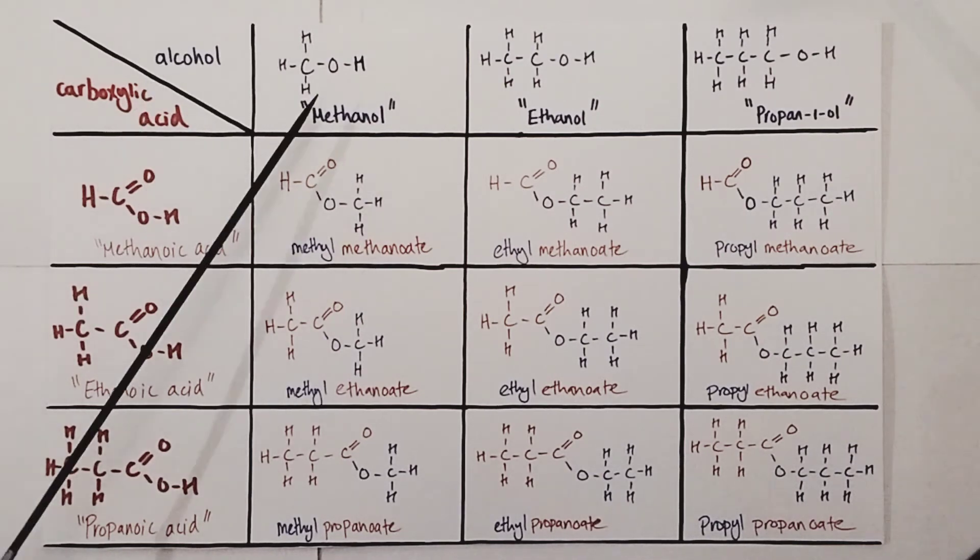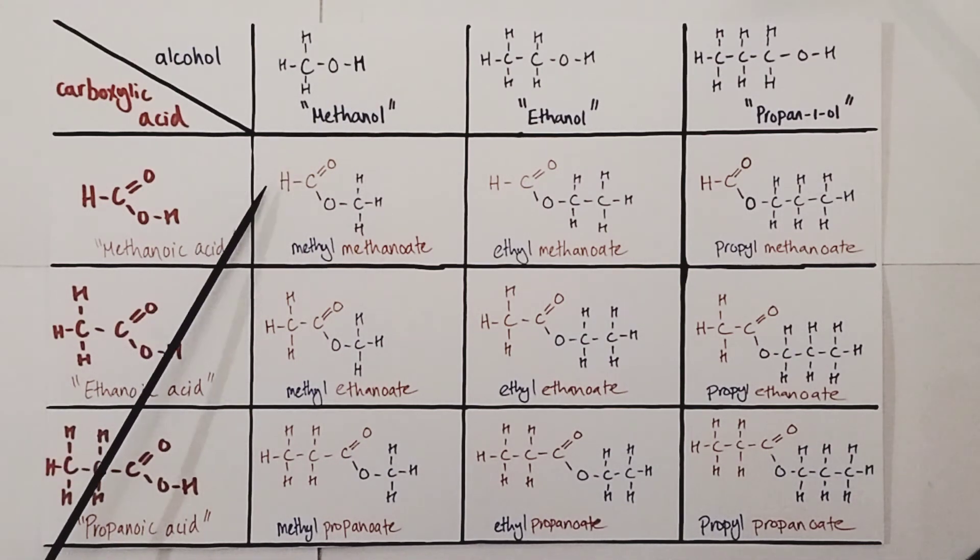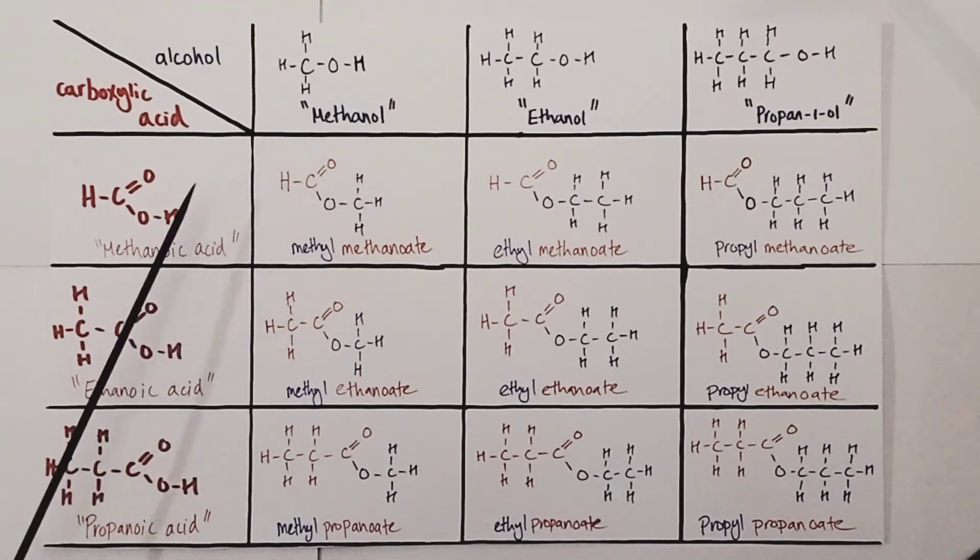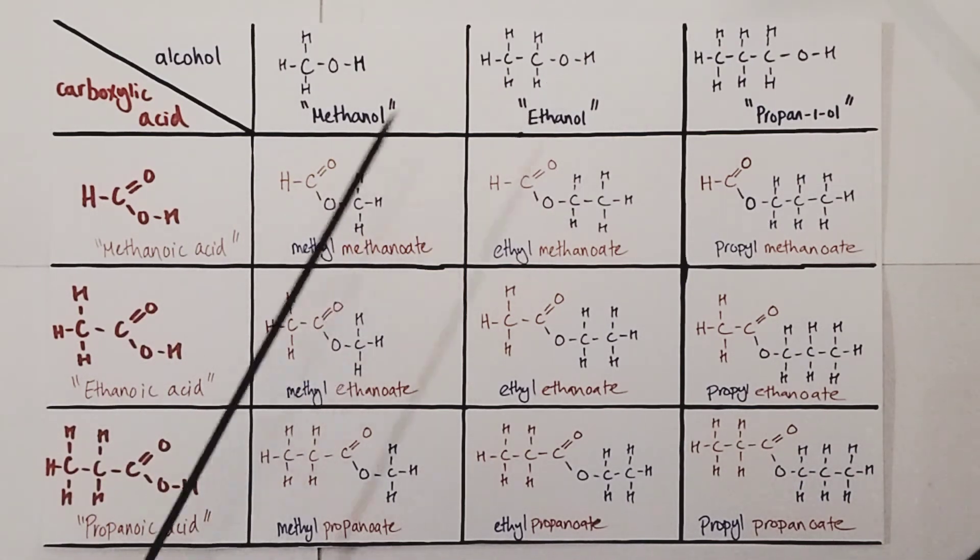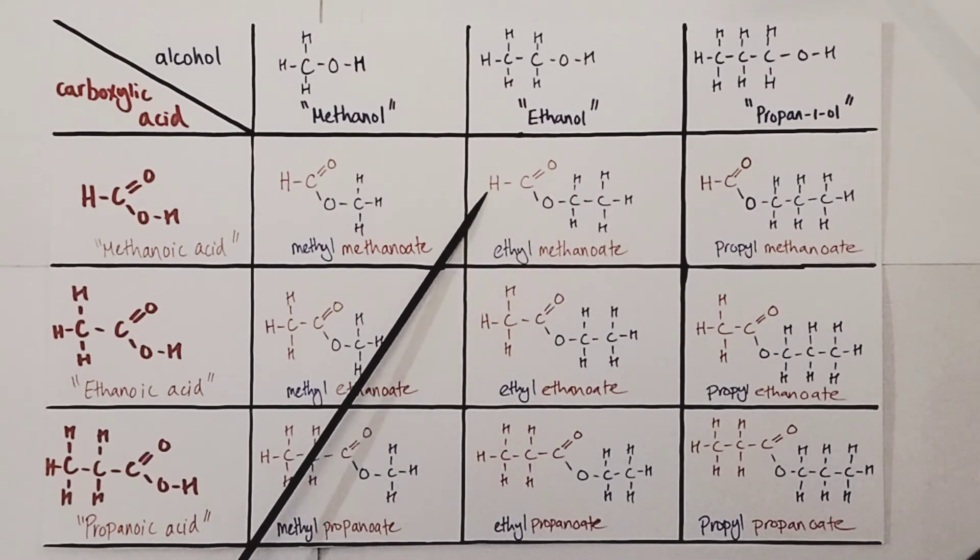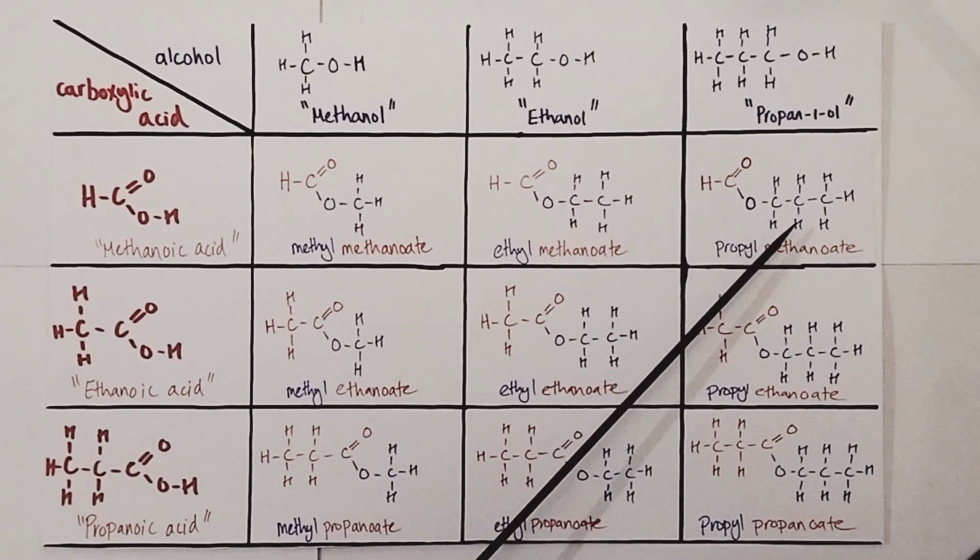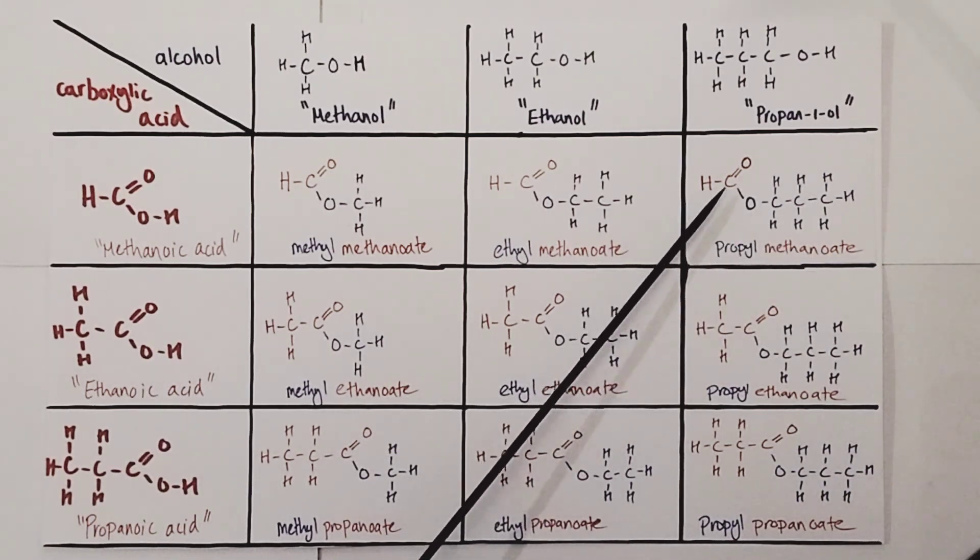If I were to react methanol with methanoic acid, I'd lose the OH from the methanoic acid and the hydrogen from methanol joining together, I'd form this ester here. Hopefully the colors can help you track each structure. I'm just going to run through these really quickly. Combine these two, alcohol and carboxylic acid together, you'll form methyl methanoate. Ethanol and methanoic acid you'd form ethyl methanoate, and if I did propan-1-ol and methanoic acid, I'd form propyl methanoate.